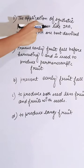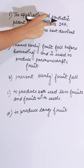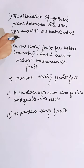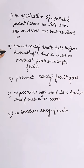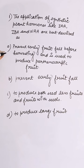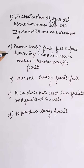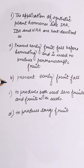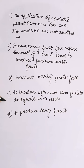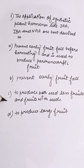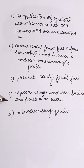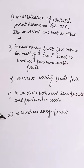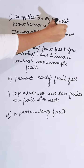The question is about synthetic plant hormones like IAA, IBA, and NAA. Which option best describes their use? Option 1: prevent early fruit fall before harvesting and is used to produce parthenocarpic fruit. Option 2: prevent early fruit fall. Option 3: produce both seedless fruit and fruits with seeds. Option 4: produce large fruit.